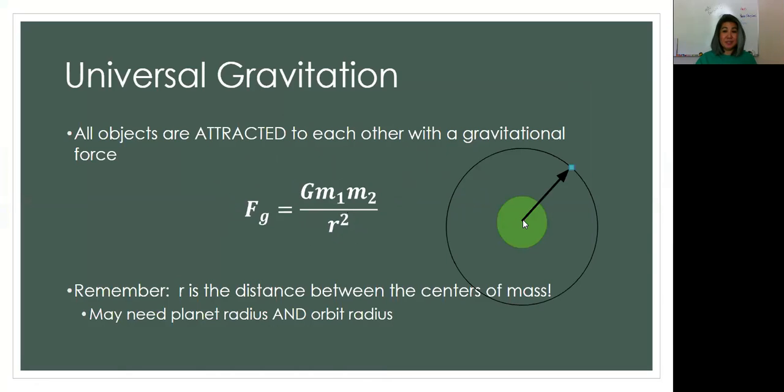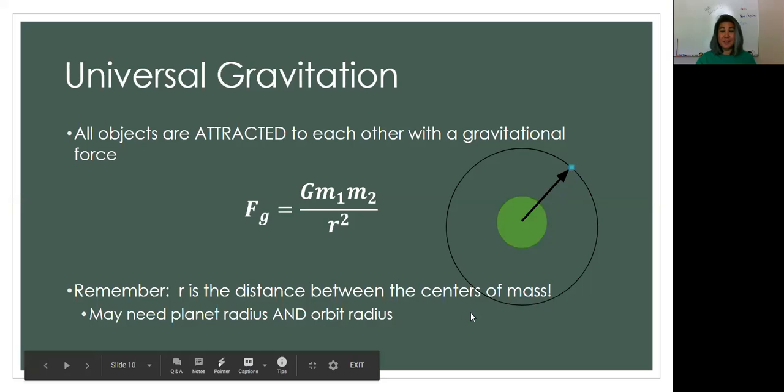So when you have a planet and something orbiting that planet, you do need the planet radius, right, from center of the planet to the surface, as well as maybe the orbit radius, which a lot of times is from the surface to the object. So make sure you know what R they're giving you if they give you a problem with universal gravitation.